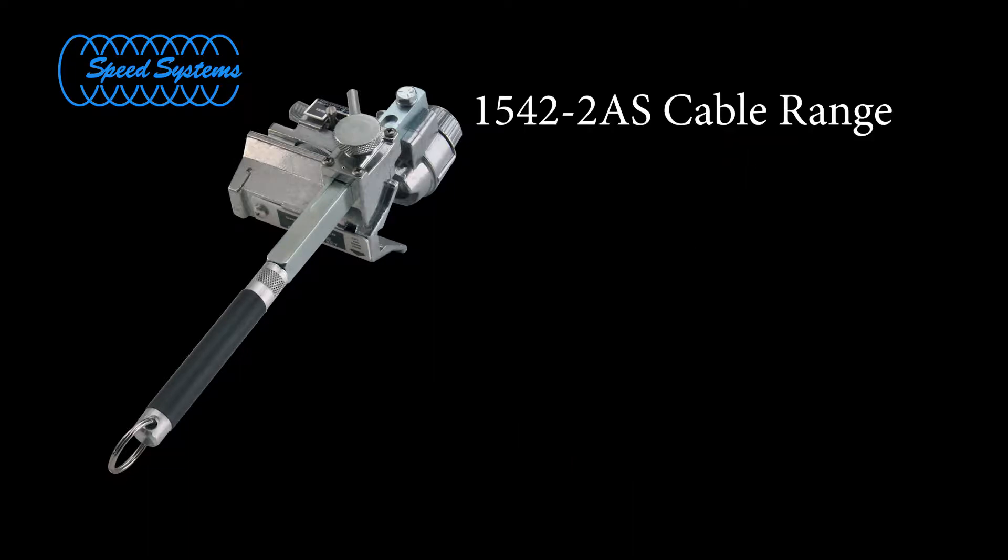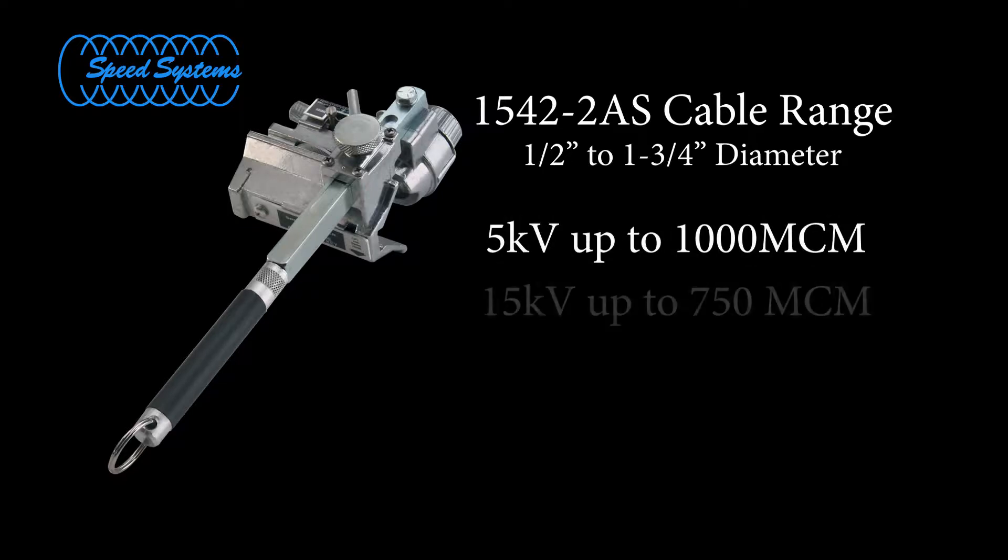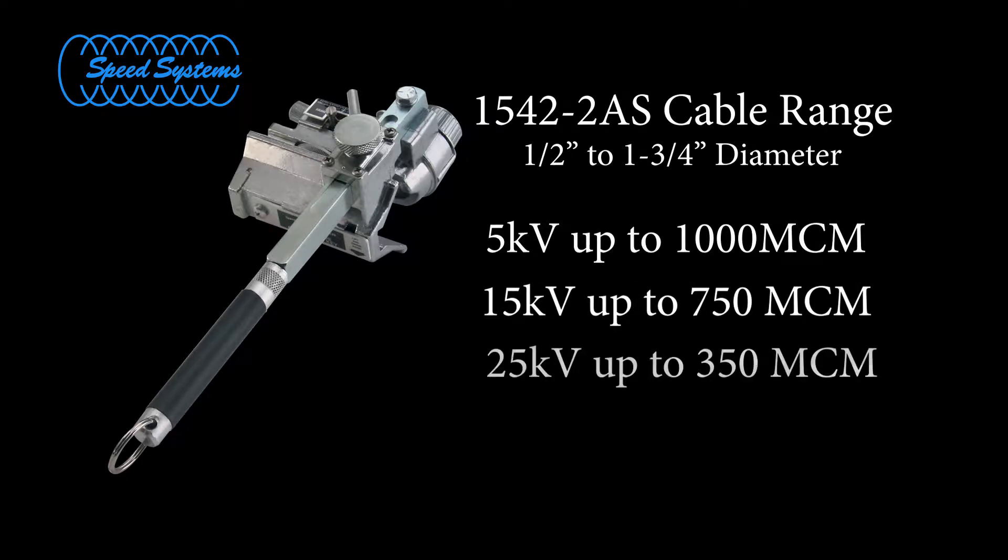The 1542-2-series strippers are designed for cables from 1.5-inch to 1.75-inches in diameter over the semi-con shield. This roughly translates to 1,000 MCM and smaller when stripping 5KV cable, 750 MCM and smaller 15KV cable, 350 MCM and smaller 25KV cable, and 3-aught and smaller 35KV cable. Refer to the Speed Systems Mark series tools for larger cables.